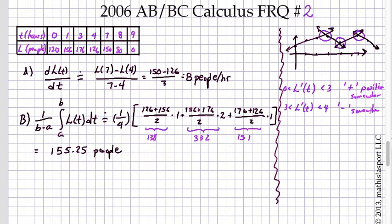We know on the interval from 4 to 7 that it must be positive somewhere. And we know that somewhere on the interval from 7 to 9 it must be negative somewhere.